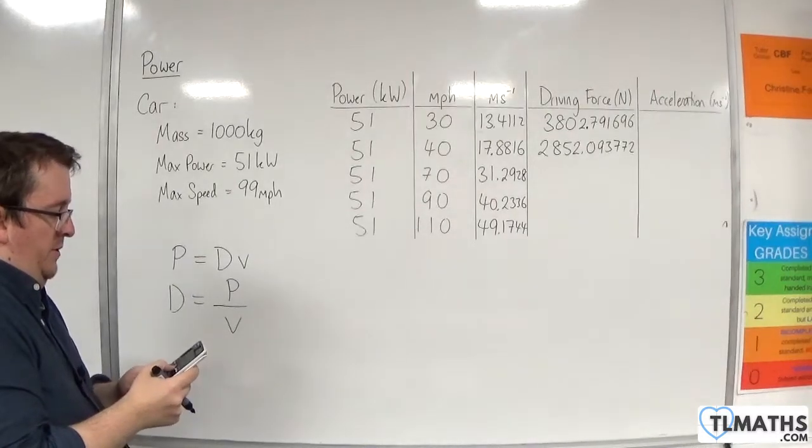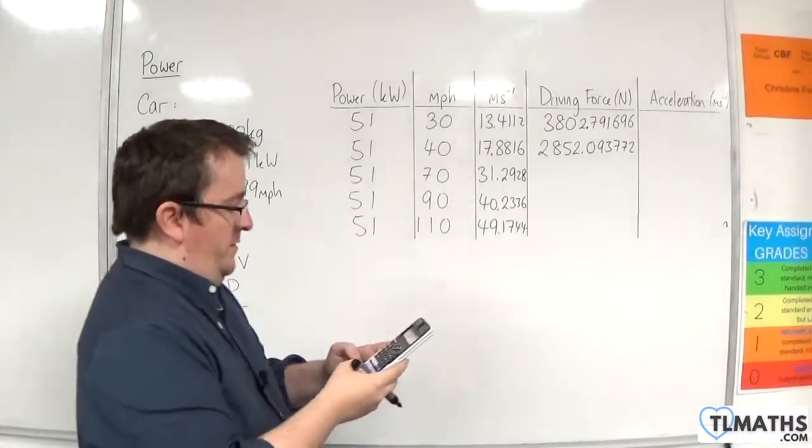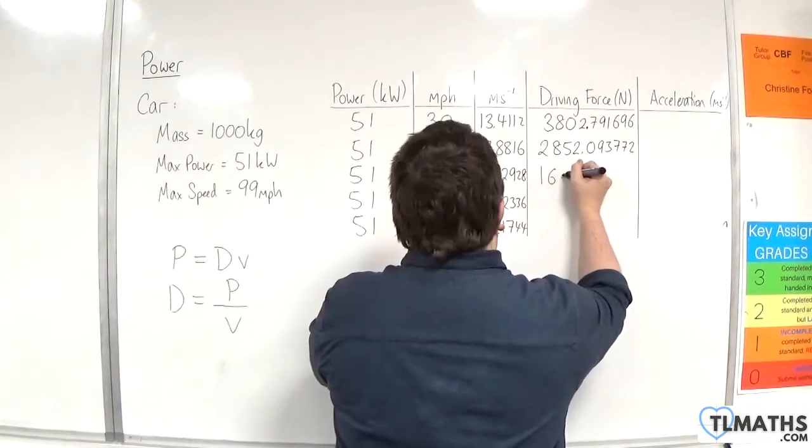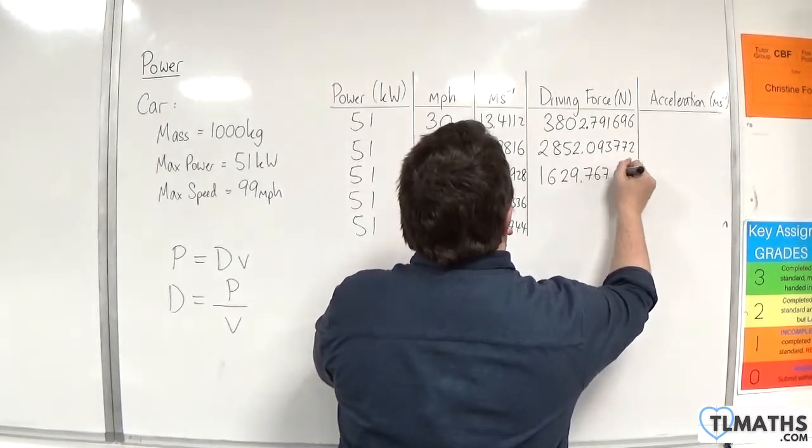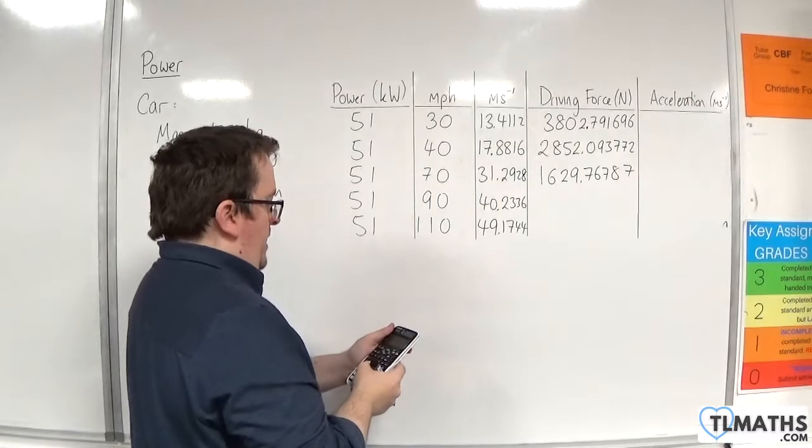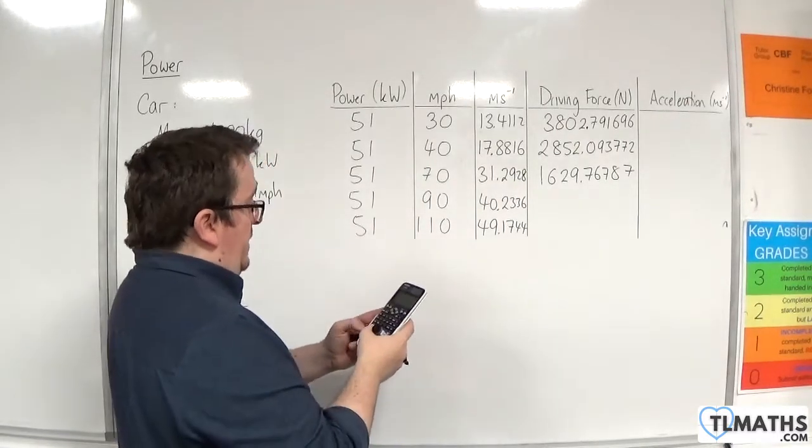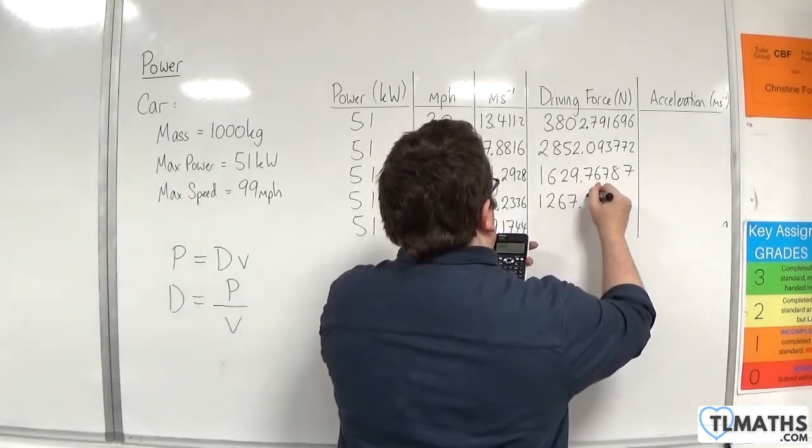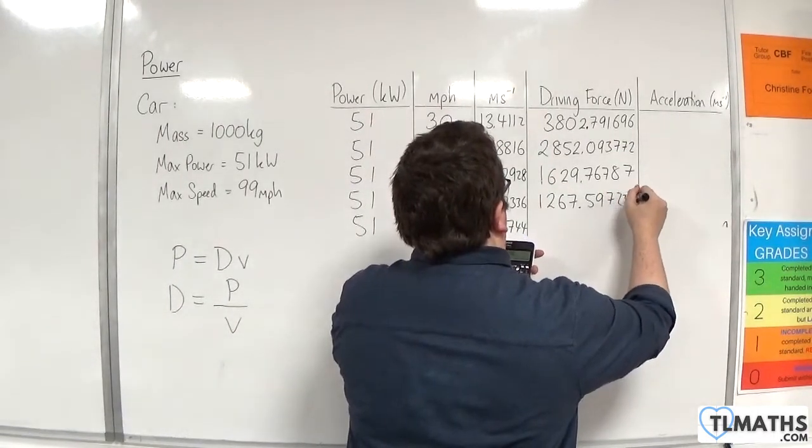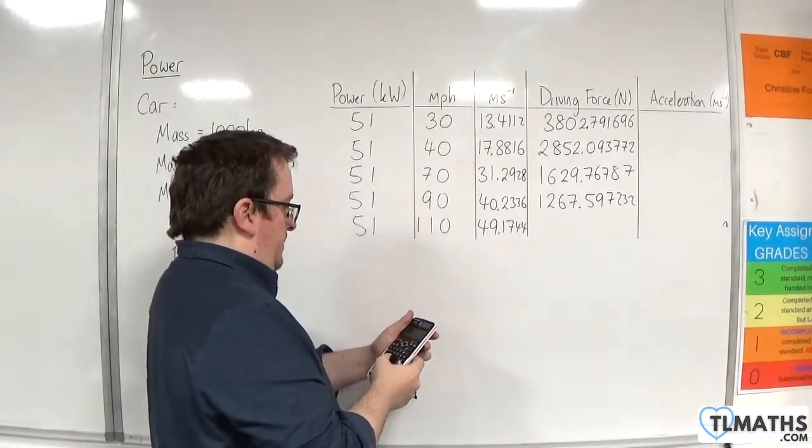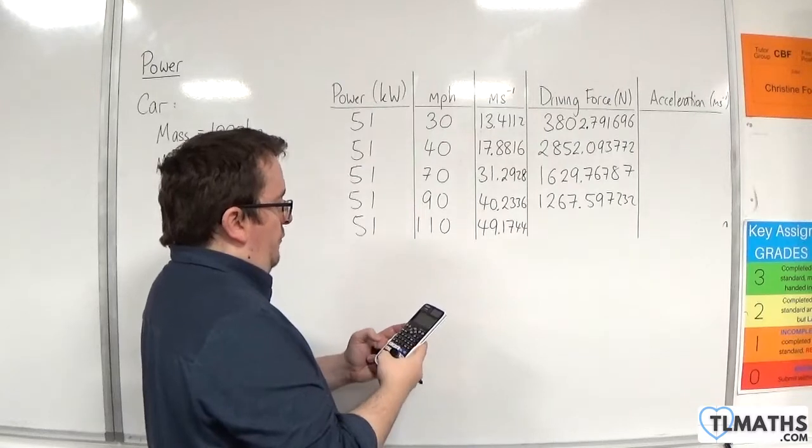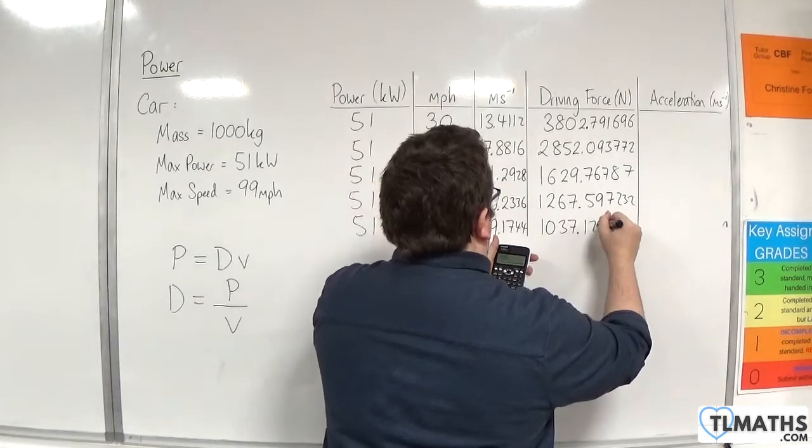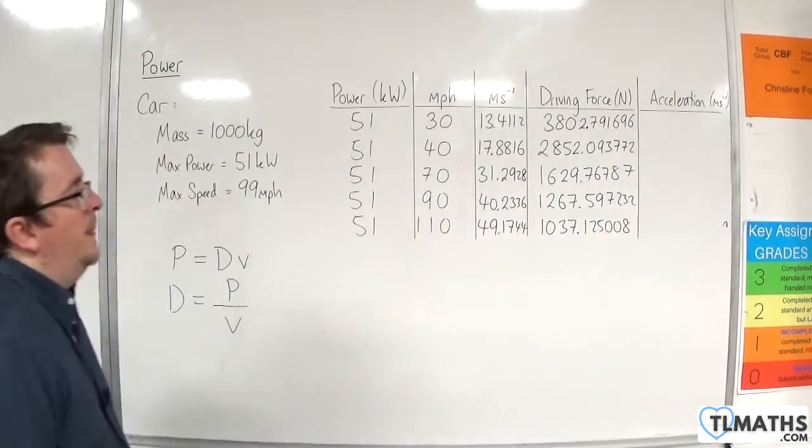I'm going to change it now to 51,000 divided by 31.2928, and that's 1,629.76787. Change it to 51,000 divided by 40.2336, so 1,267.597232. And last one, 49.1744, and I get 1,037.125008.